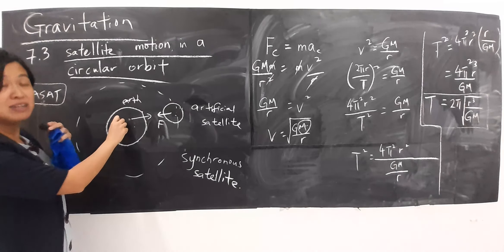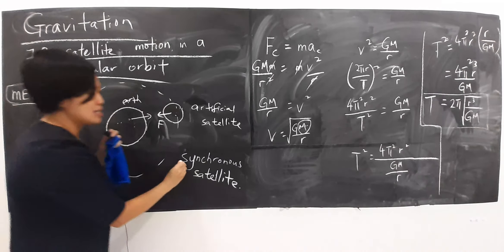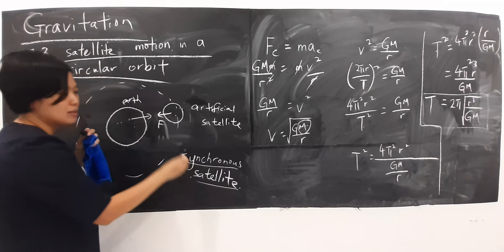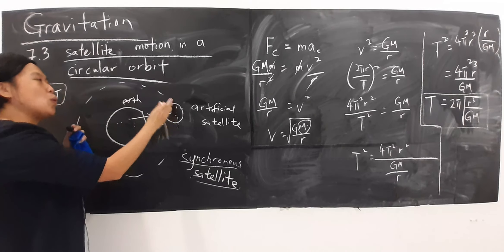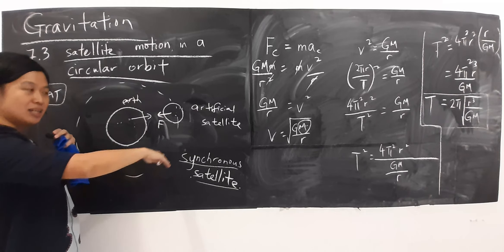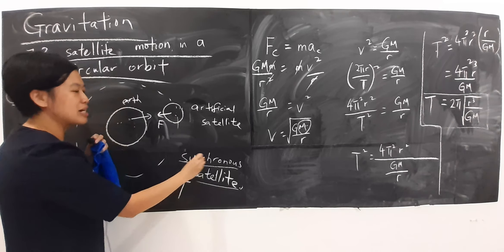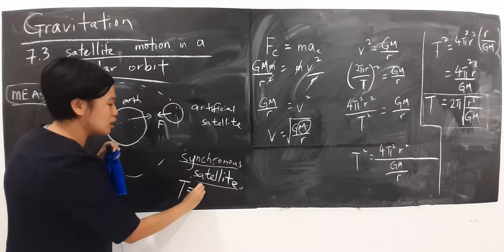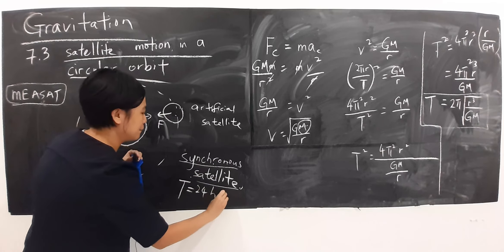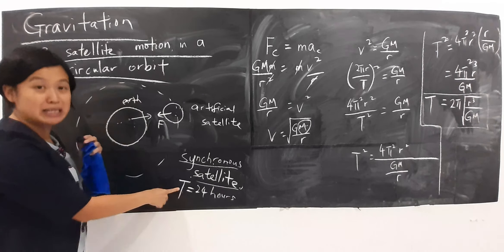Jadi, kalau Earth rotation, Earth rotation, 24 hours. Synchronous satellite. Also, the period. For information, period untuk synchronous satellite, the period is actually 24 hours, which is same as Earth rotation.